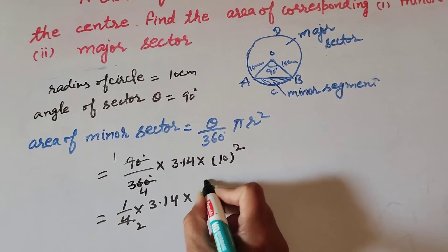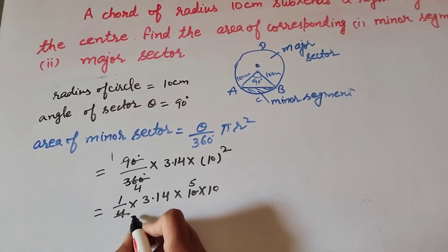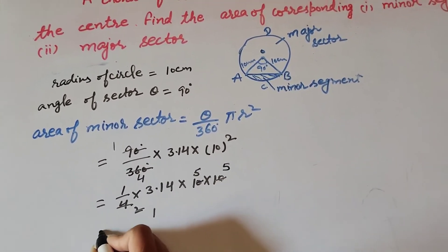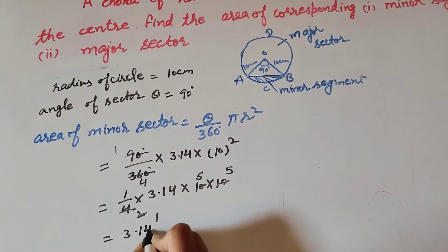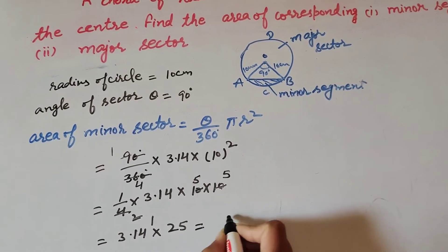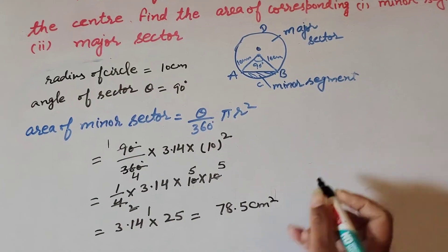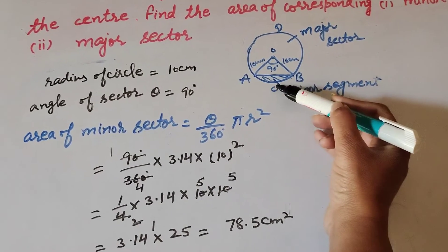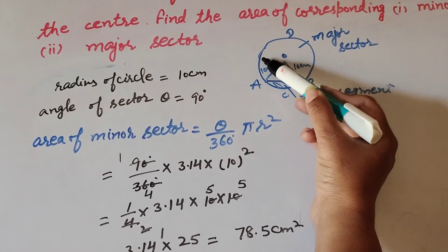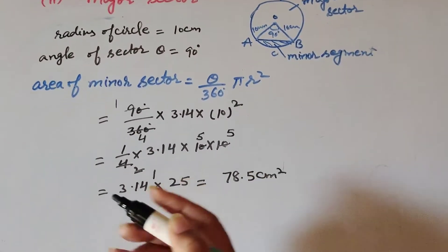Now 10 and 4 are both divisible by 2, so we cancel them. Then 10 and 2 are also divisible by 2, so we cancel again. This gives 3.14 multiplied by 25, which equals 78.5 cm squared. So the area of minor sector OACB equals 78.5 cm squared.